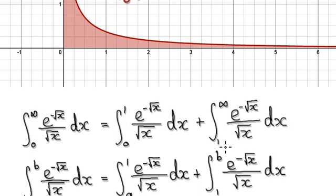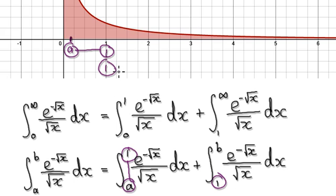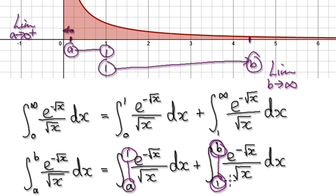Our normal routine would be to do it from an arbitrary point A, and then integrate it to 1. And then from 1, integrate it to an arbitrary point B. Later on, we can take the limit as A approaches 0 from the right-hand side, and then do the same for B — we can take the limit as B heads towards positive infinity.